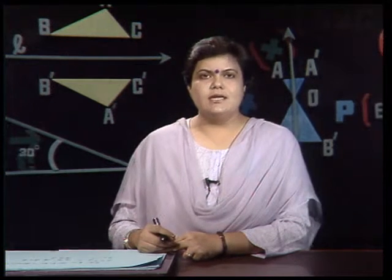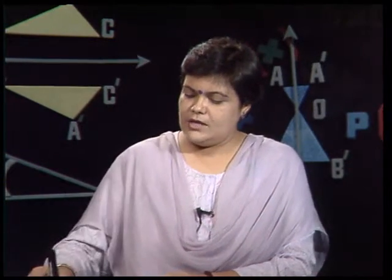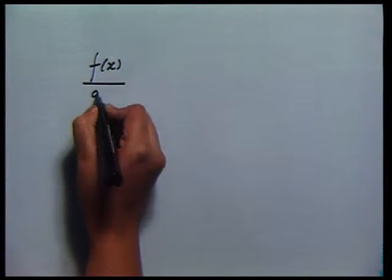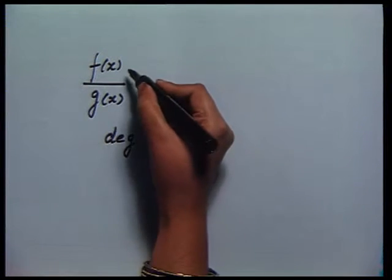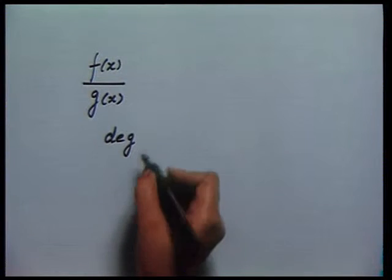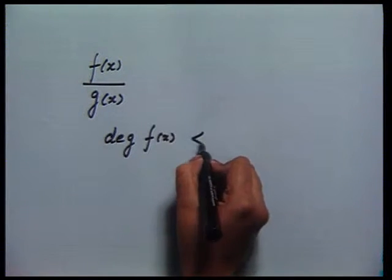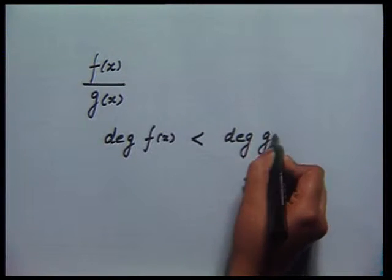So you see it is not a very tedious task. But two things must be kept in mind when using the method of partial fractions. First, considering a rational function f(x)/g(x), the degree of the denominator must be greater than that of the numerator — that is, degree of f(x) must be less than degree of g(x). If it is not so in the given problem, you must first divide and write it as a proper fraction.